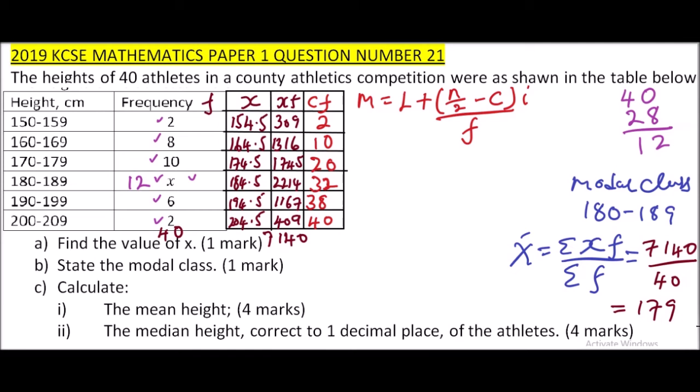You note that since we have the frequency number of athletes as 40, the median class lies in the class of 170 to 179. That is where we have the 20th or 21st person, which is the median. N represents the total frequency, which is 40. C represents the cumulative frequency above the median class, that is 10. F is the frequency, which is 10. And I is the class interval. The class interval, we can get by subtracting the upper class boundary limit, like 159.5 minus 149.5, you get 10.